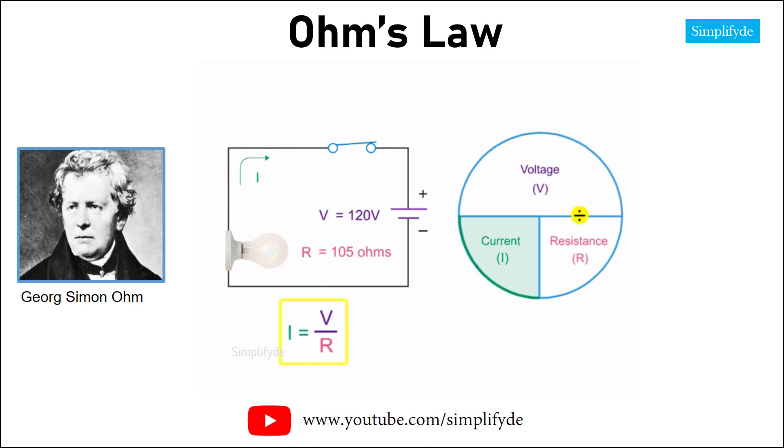Using the Ohm's law circle and solving for current, you would divide the voltage by the resistance. So, 120 volts divided by 105 ohms is 1.142 amps. You have 1.142 amps of current flowing through the light bulb.